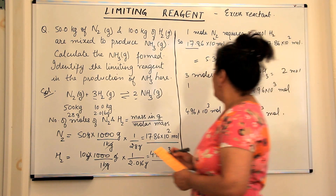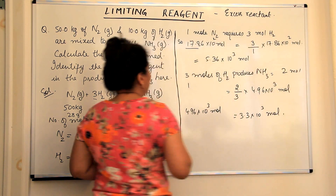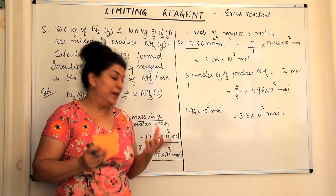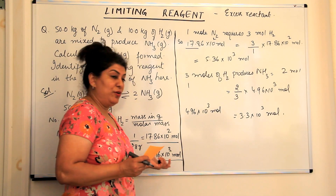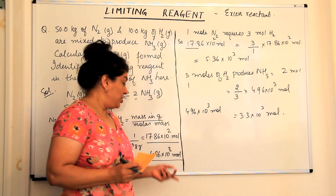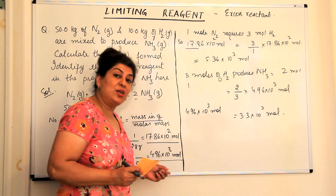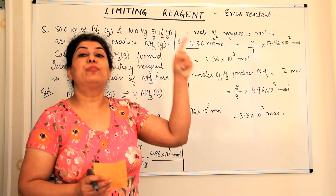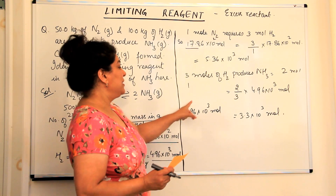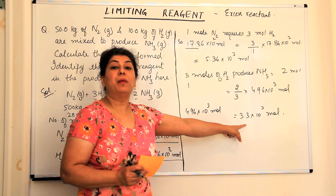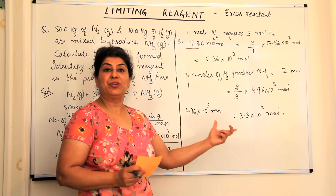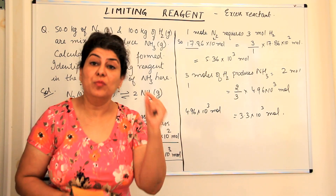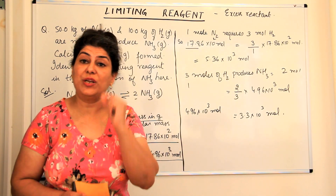Since hydrogen is the limiting reagent, its quantity determines the amount of product obtained. So using 4.96 × 10³ moles of hydrogen, we find that 3.3 × 10³ moles of ammonia would be produced.